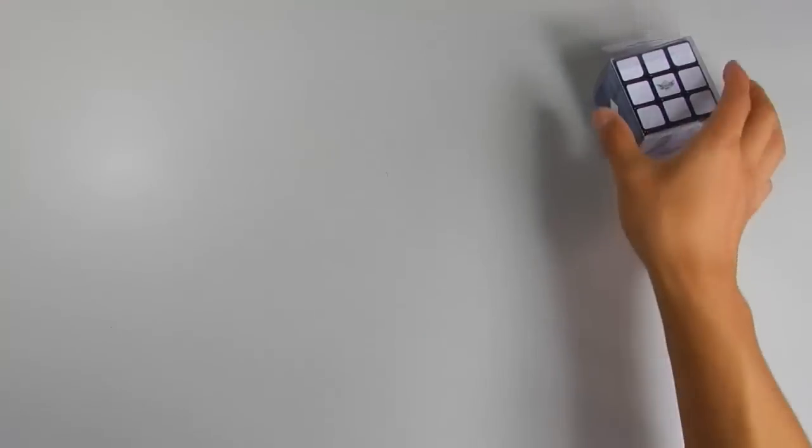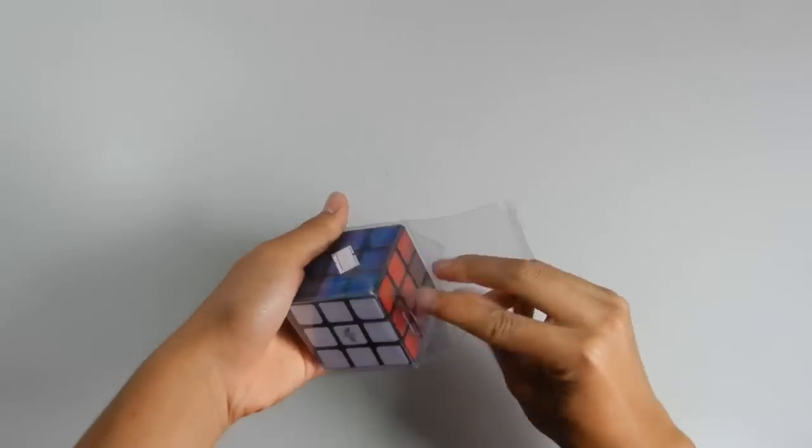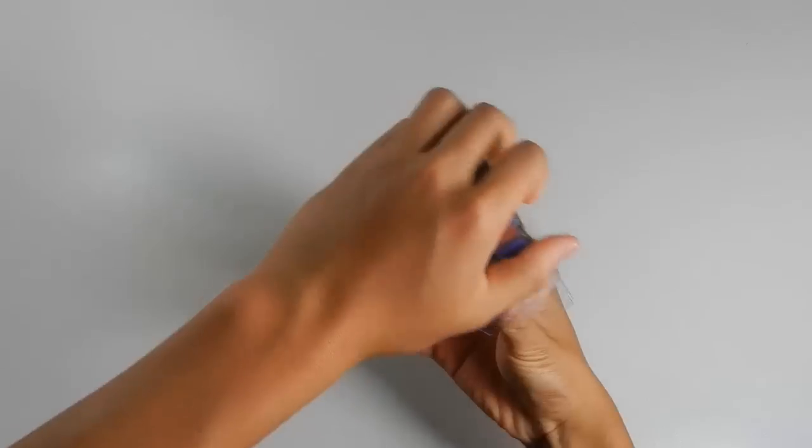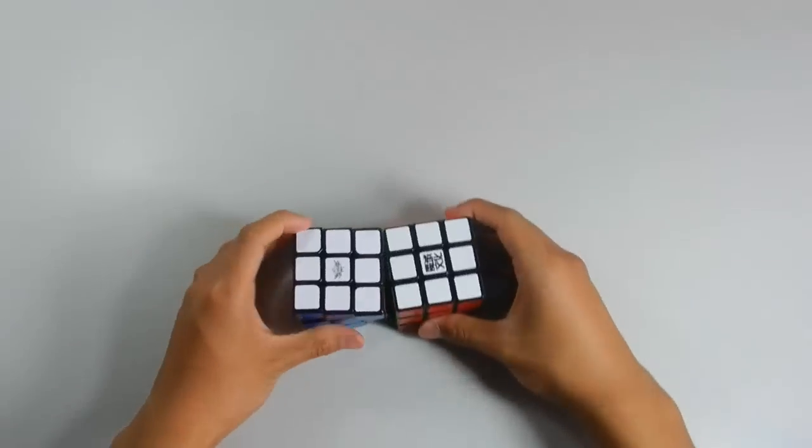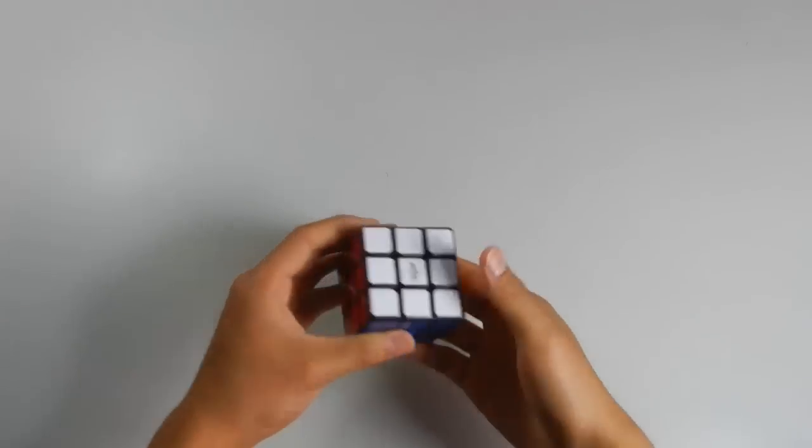Yeah, so I'll lube this up and play around with it. And now it's the last one, which is the Cyclone Boys 56 millimeter in black, I believe, or the 57 millimeter. Let's see. So here it is. Let's see if it's a 56 or 57. Oh no, it is 57. Yep, it's a 57 millimeter cube.